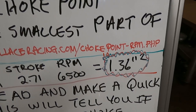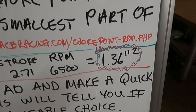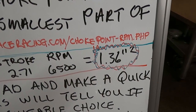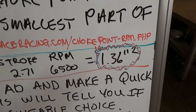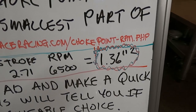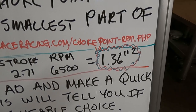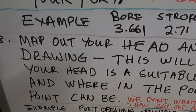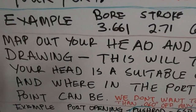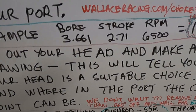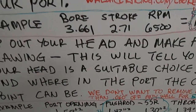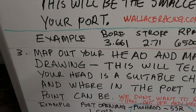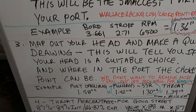This number isn't necessarily the law of the land, but it is a number you do want to pay attention to. Make sure that if you drift away from it, it's not too far — especially if you're a beginner — because this is sort of where the energy in your port is going to be. For this 2800 project it's giving us 1.36. Map out your head, make your quick drawing, and this will tell you basically whether your head is suitable for what you're doing. If every spot in the port is significantly bigger than that number, the head may be really bigger than your project needs.